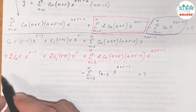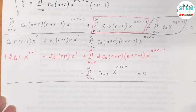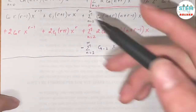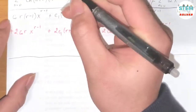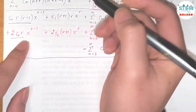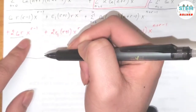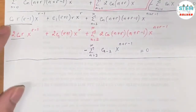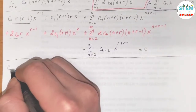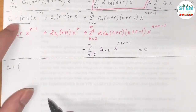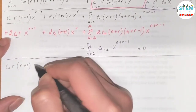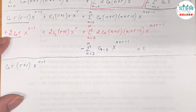Now combine like terms. Collecting the coefficient of x to the (r-1): I have c_0 times r(r-1) plus 2r, which factors as c_0 times r times (r+1), all multiplied by x to the (r-1).